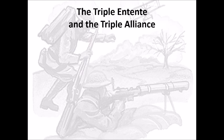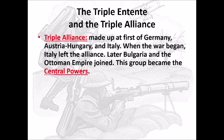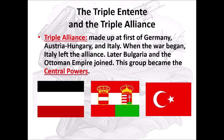Let's talk about these alliances. The Triple Alliance is made up of Germany, Austria-Hungary, and Italy. When the war began, Italy left the alliance, and two other countries joined: Bulgaria and the Ottoman Empire — and these became the Central Powers. A lot of people get confused and think the Triple Alliance became the Allies — no, they became the Central Powers. The three flags shown here represent Germany on the left, Austria-Hungary in the middle, and the Ottoman Empire's flag. The Ottoman Empire today is basically Turkey.